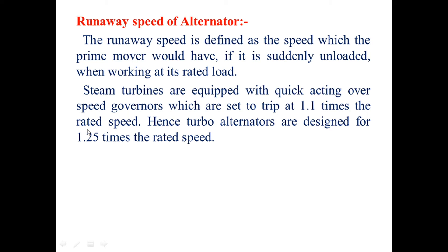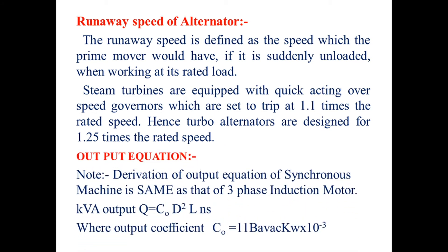Steam turbines are equipped with quick-acting over-speed governors set to trip at 1.1 times the rated speed. If the speed exceeds 1.1 times the rated speed, the governor signals the relay to trip. Hence, turbo alternators are designed for 1.25 times the rated speed. This concludes the recap of topics studied in lower semesters.